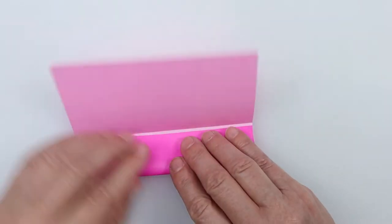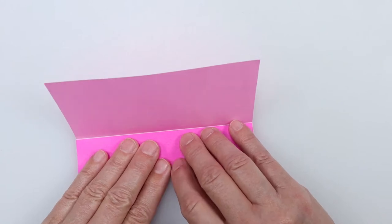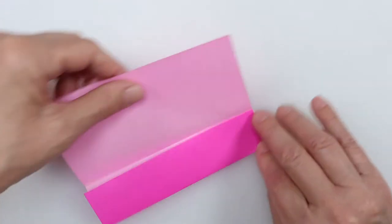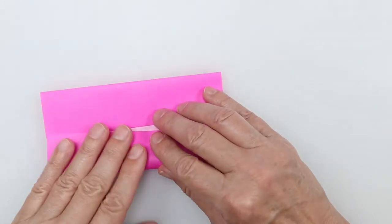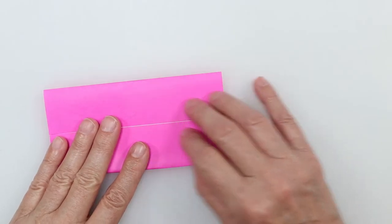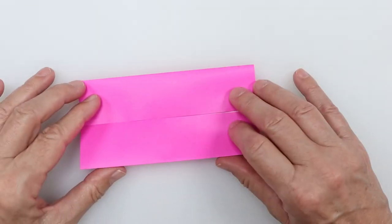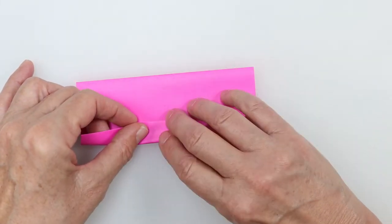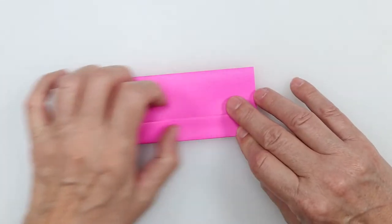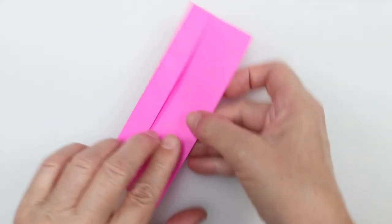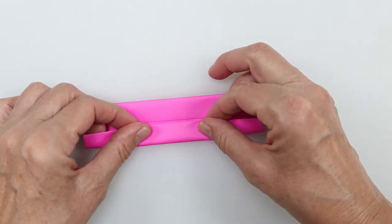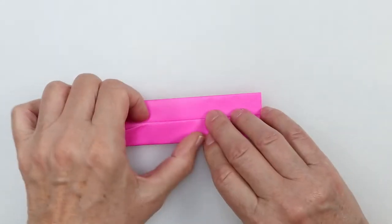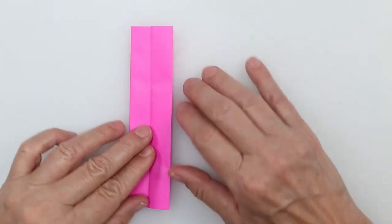I'm going to fold the outward edges to that first crease I just made on both sides. Now I'm not going to unfold it right now, but I'm going to fold these edges to the center crease, and crease it nice and sharp on both sides, folding both of these like this.